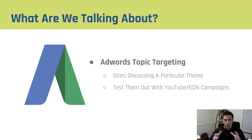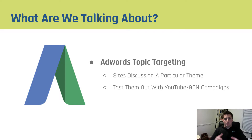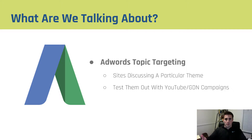Just to introduce Google topics — AdWords topics are basically buckets that they put sites, videos, and apps into that are talking about a particular theme. So for instance if a website is talking about stocks, an app has information about stocks or bonds, and a video is talking about bonds, all of those will be rolled underneath the stocks and bonds topic.